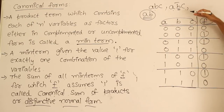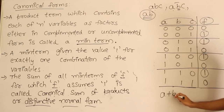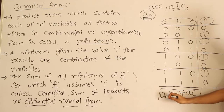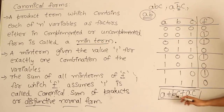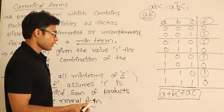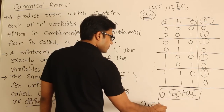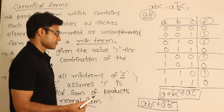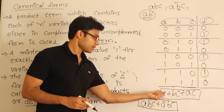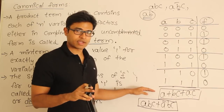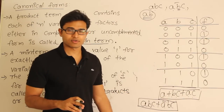There is a difference between sum of products and canonical sum of products. If I write A + BC + AC, this is sum of products — each term is an AND, but not all terms contain all variables. Canonical sum of products means every minterm contains all the variables — for example A·B·C + A'·B·C. Sum of products need not contain all variables; canonical sum of products must contain all variables.